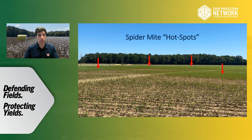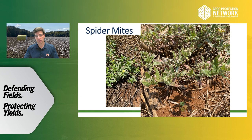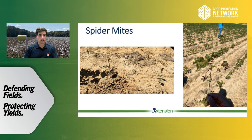We call them spider mite hotspots — random spots throughout the field where they start and then spread. Here's an image of four different hotspots in a field in central Alabama where it's a little lighter where they've started defoliating the seedling cotton. Here's also an image of cotton surrounded by cut-leaf evening primrose, which served as a host for spider mites. After the herbicide application was made and those weeds started to die, you can see reddening of the leaves on the cotton plant, showing spider mite symptomology — a good example of the green bridge.